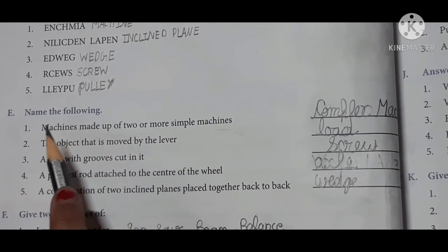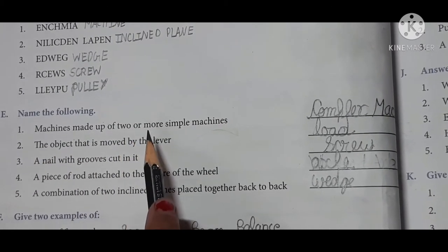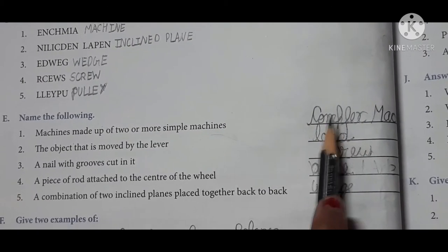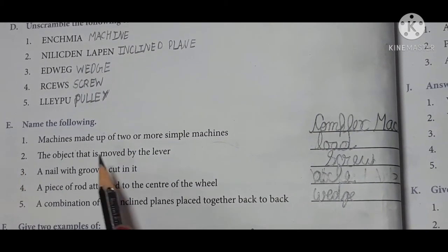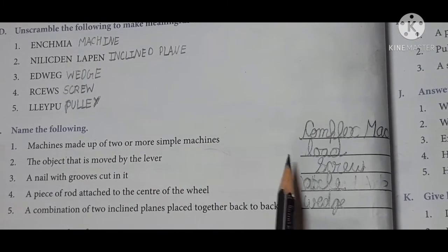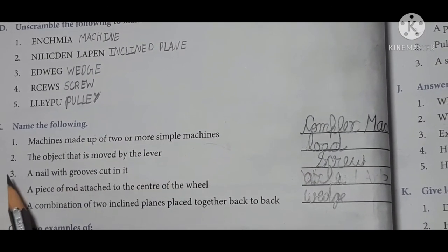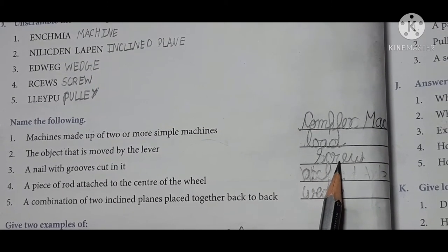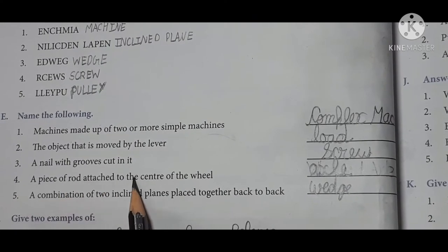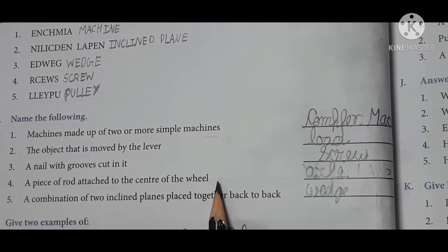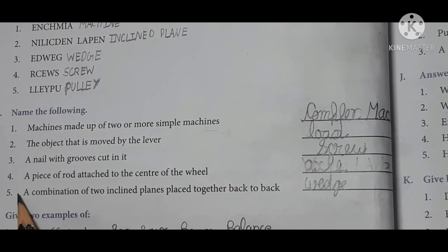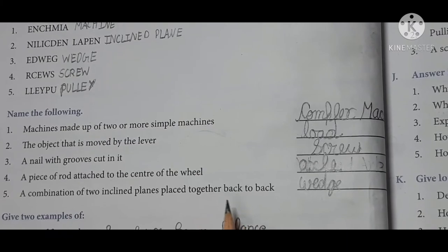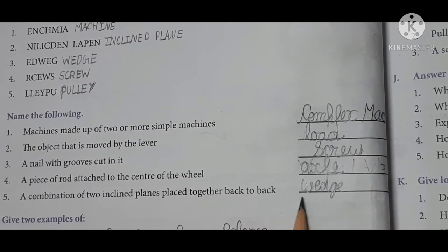Name the following. First, machines made up of two or more simple machines. It is complex machines. Second, the object that is moved by the lever is load. Third, a nail with grooves cut in it is a screw. Fourth, a piece of rod attached to the center of the wheel is called axle. Fifth, a combination of two inclined planes placed together back to back is called a wedge.